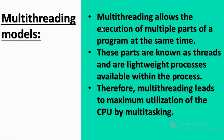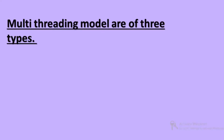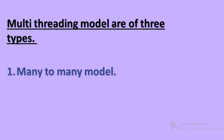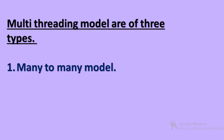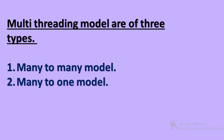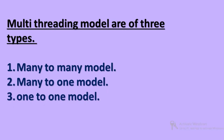There are different kinds of threads within a process, and that is why we go for multi-threading. If we look at multi-threading models, we have three types: the first one is the many-to-many model, the second is the many-to-one model, and the third is the one-to-one model.